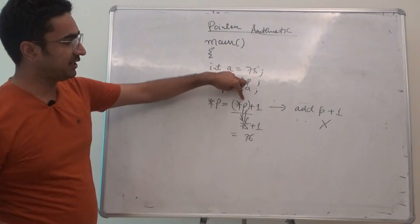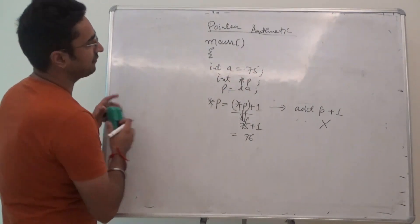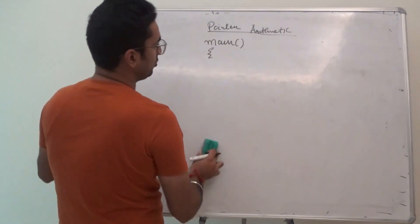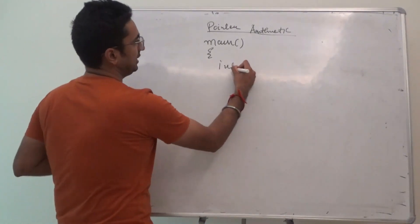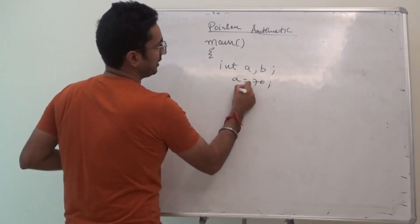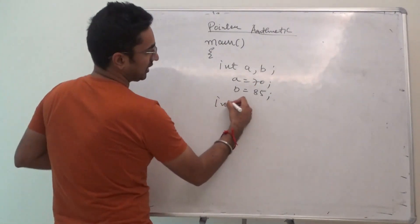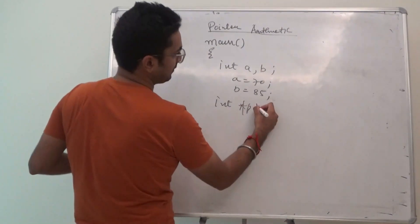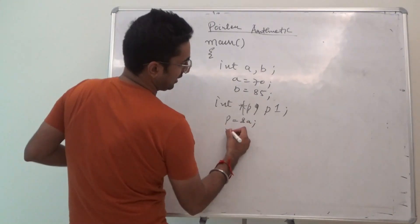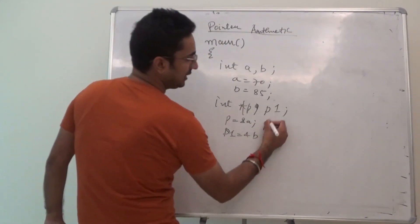So, using the dereferencing operators we can add. Let's say for example, we have another example I can quote, is that there are two types of pointers, int a, b. a is 70 and b is 85. And we have two types of pointers, p, p1. p is storing the address of a, p1 is storing the address of b.